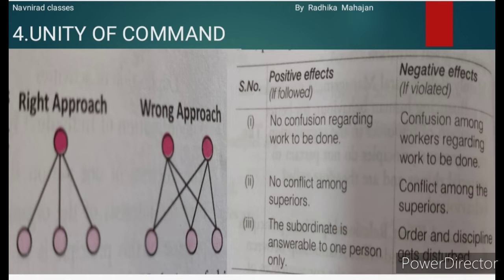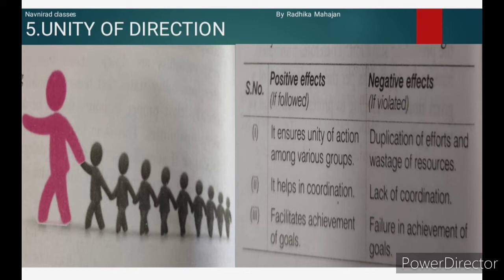Principle 4: Unity of Command. It implies that every worker should receive orders and instructions from one superior only. Otherwise, it will create confusion, conflicts, disturbance, and overlapping of activities. It emphasizes the need for each subordinate to be accountable to one superior only. If followed: no confusion regarding work, no conflicts among superiors, and the subordinate is answerable to one person only. If violated: confusion among workers, conflicts among superiors, and order and discipline get disturbed.